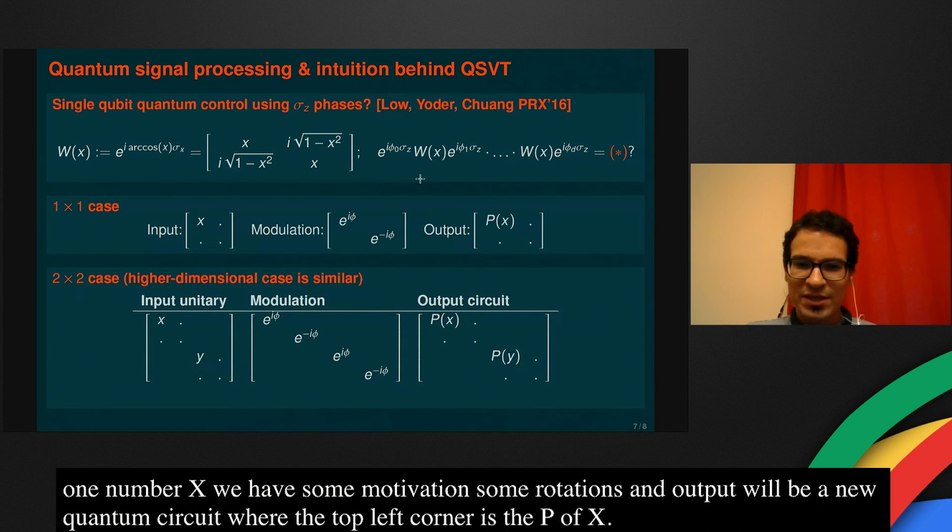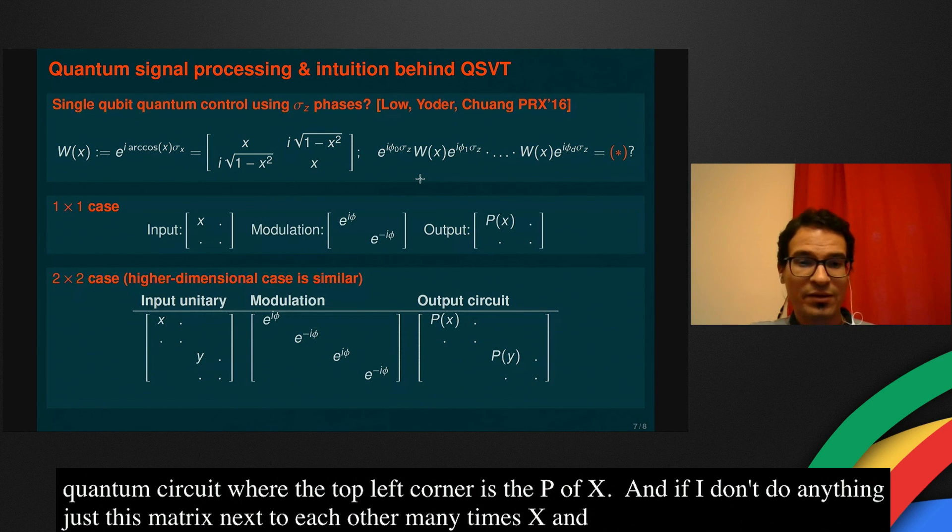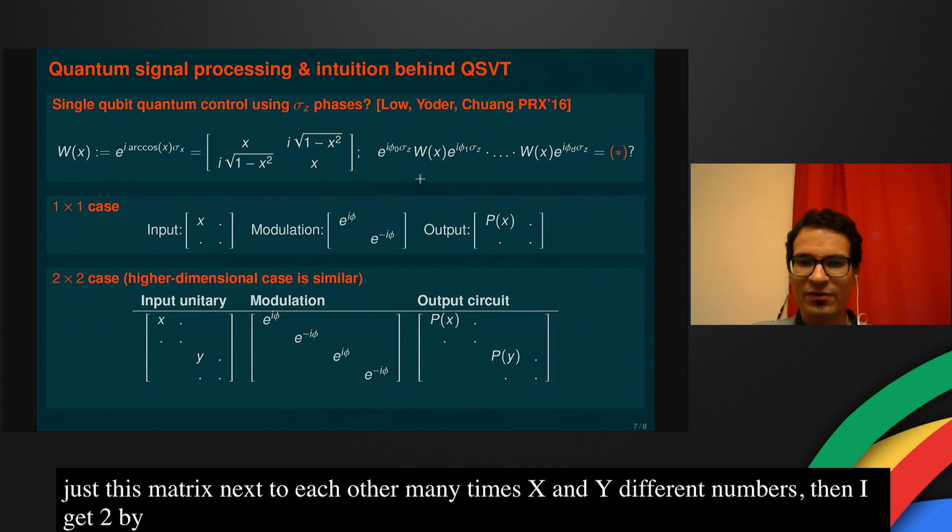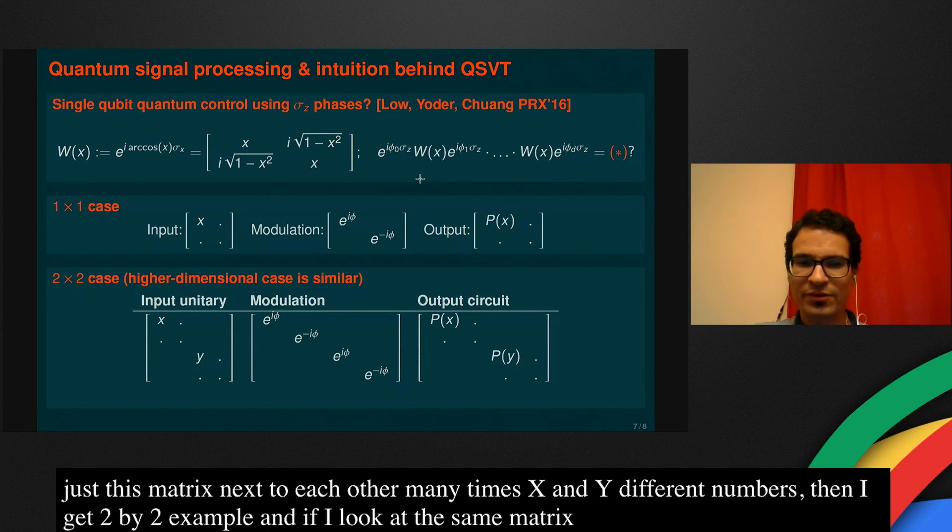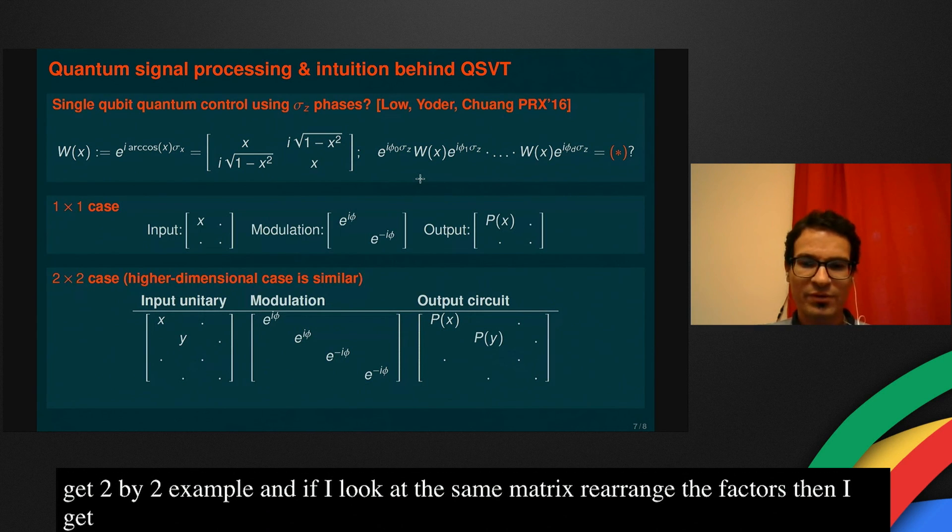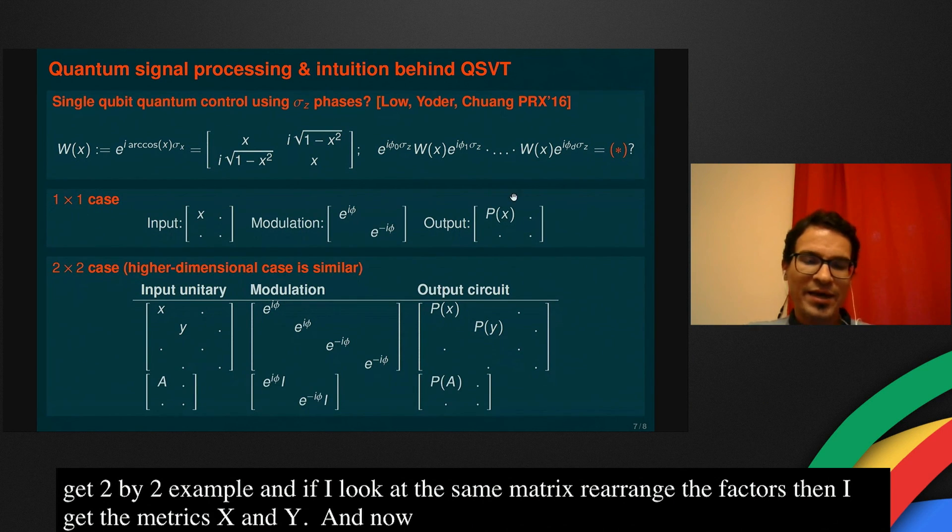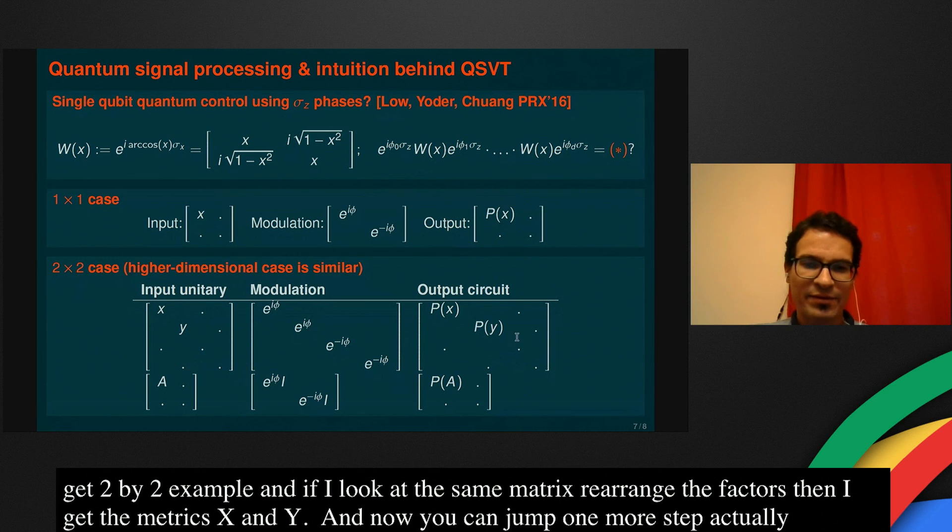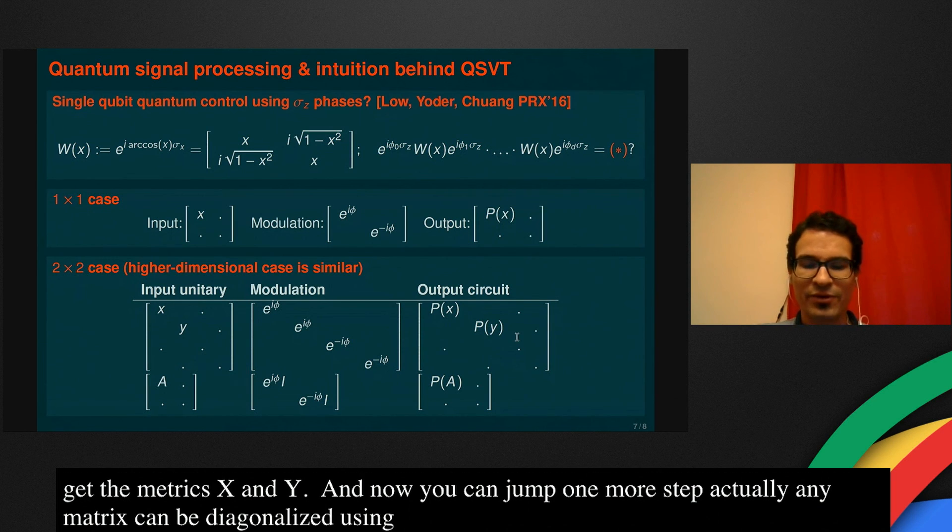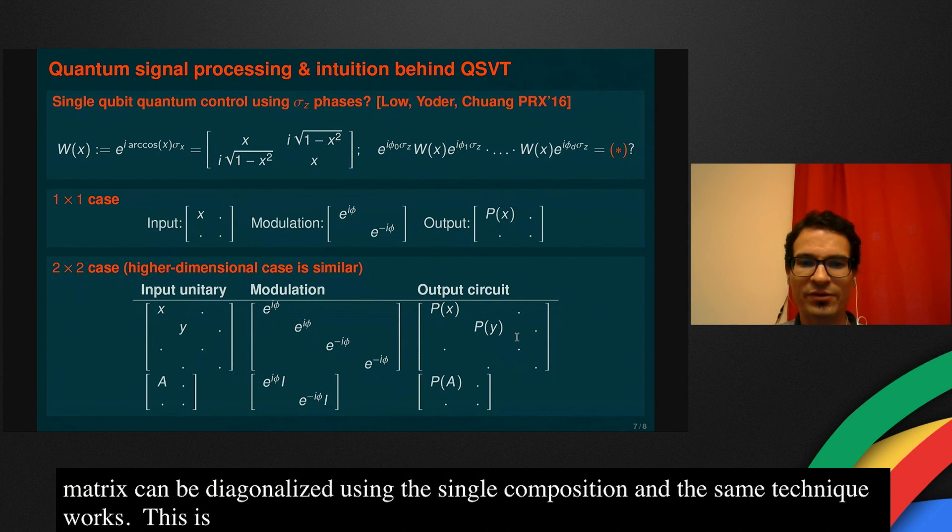If I don't do anything, just copy this matrix next to each other many times with X and Y, different numbers, then I get a two by two example. And if I just look at the same matrix, just rearrange the tensor factors, then I get a diagonal matrix, X and Y. And of course, the mathematics works the same way. And now you can jump one more step. Actually, any matrix can be diagonalized using the singular value decomposition and the same technique works. So this is a very brief sketch of why this result could work.